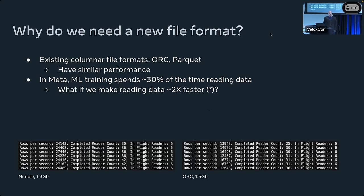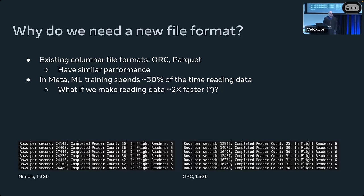Why do we need a new file format? We have existing file formats. Internally at Meta, we mostly use ORC. ORC and Parquet have very similar performance — they solve the same problems and mostly behave the same. At Meta, we noticed that our machine learning workloads spend roughly 30% of the time reading data before even processing the data. What if we can make the reader roughly 2x faster? We can shrink that by 15%, which would be our savings.